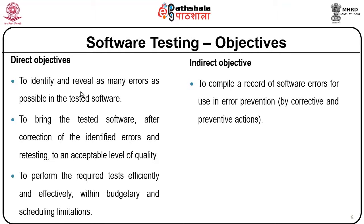Objectives of software testing: direct objectives are to identify and reveal as many errors as possible in the tested software, to bring the tested software after correction of identified errors and retesting to an acceptable level of quality, and to perform the required tests efficiently and effectively within budgetary and scheduling limitations. The indirect objective is to compile a record of software errors for use in error prevention through corrective and preventive actions.